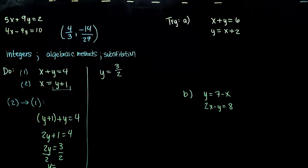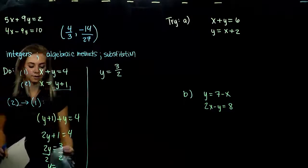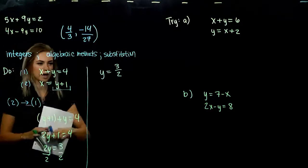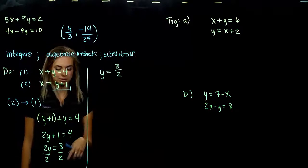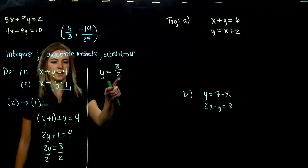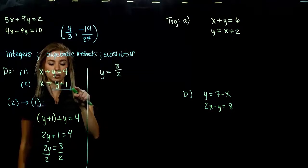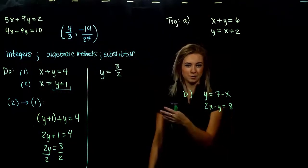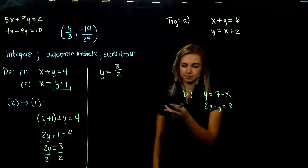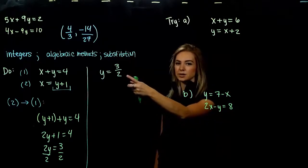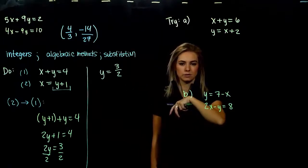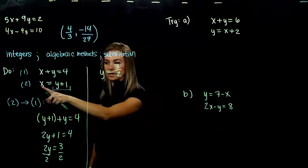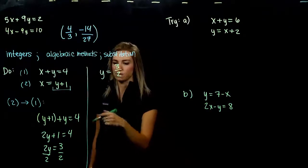But we're not quite done — we're trying to find the point that is a solution to this system, so we have the y-coordinate and we still need x. We can take this value and substitute it back into either equation, but one of them will be easier than the other. We should put y equals 3 halves into equation 2, since x is already isolated there — that's less work.